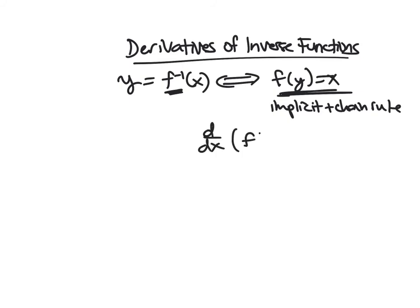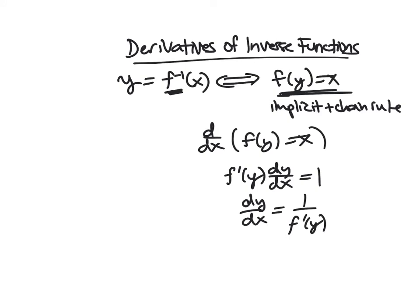And so if I take the derivative of each side, so I'm going to take dx of f of y equals x, then I'm going to get f prime of y dy dx equals 1. And then I just solve for dy dx. So this is 1 over f prime of y. But I know what y is. y is f inverse of x. So I can substitute in, and I get 1 over f prime of f inverse of x. And so this is the derivative of the inverse. This is the formula.